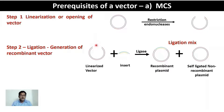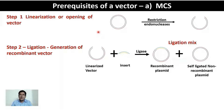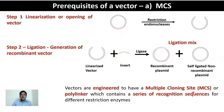The point where the insert is integrated into the vector is critical. Instead of a random region, a specific region within the vector is defined for insertion. This region is characterized by a large number of recognition sequences for multiple restriction endonucleases — both staggered-end and blunt-end. Staggered-end ligation is preferred over blunt-end ligation. This region containing a large number of restriction enzyme recognition sequences is referred to as the Multiple Cloning Site (MCS) or polylinker.